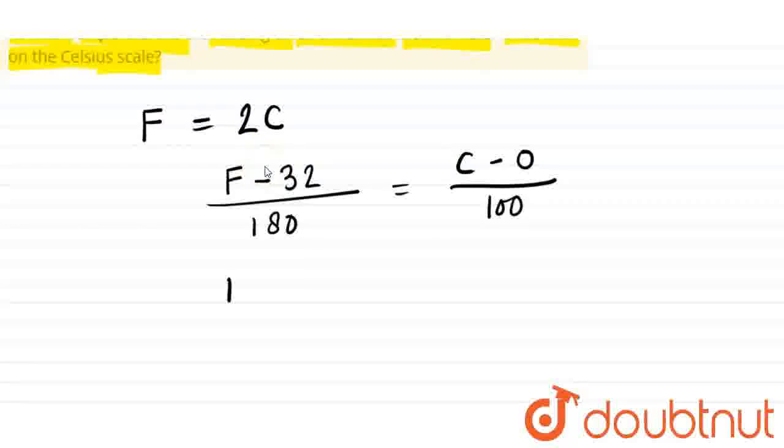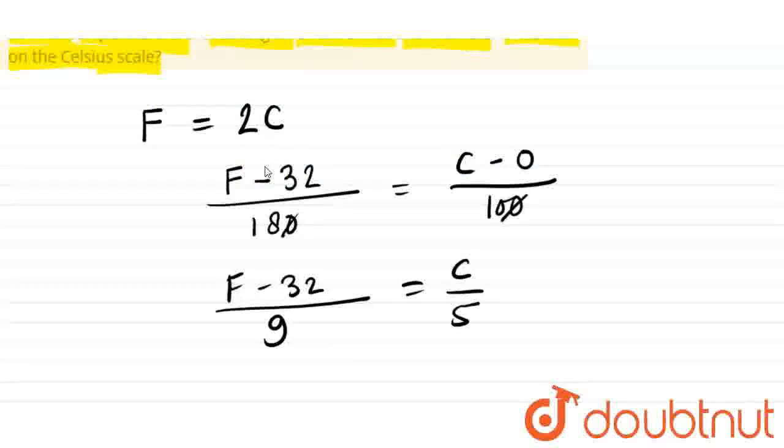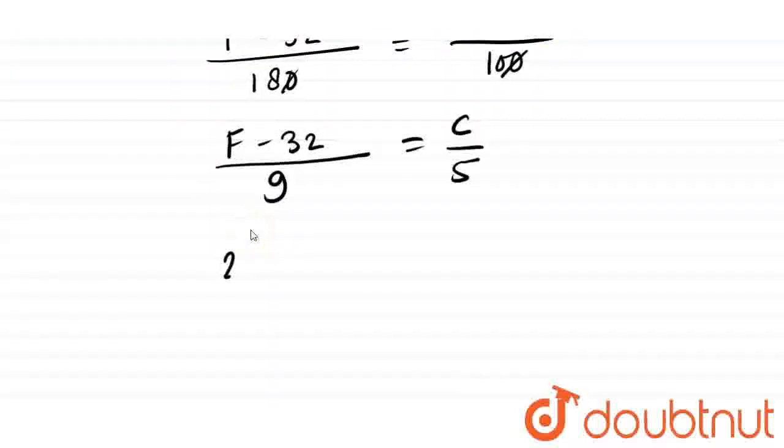So we can write F minus 32 upon 180. Cancel it, this becomes 9. And this becomes C upon 5. Now we can write F is 2C. F minus 32 equals C minus 0.